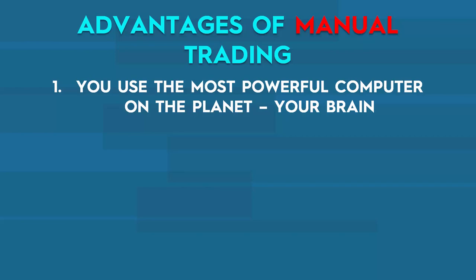You can take what evolution has given you and apply it in the forex market, because it is all about patterns. Using your brain, you can come up with incredible trading strategies that no computer in the world can currently come up with. They can crunch numbers, but they're not creative — they can't see things the way you see them. Not yet, anyway.